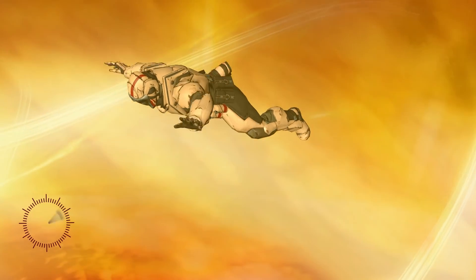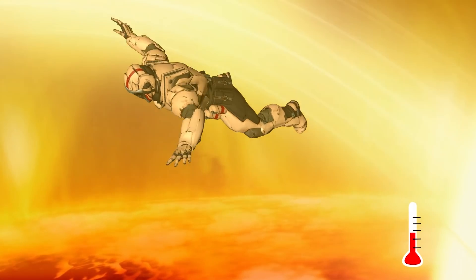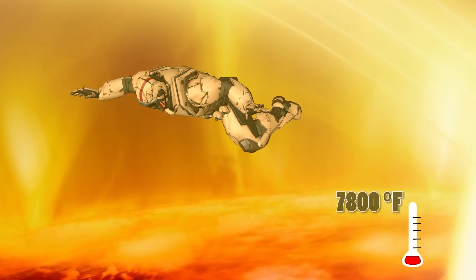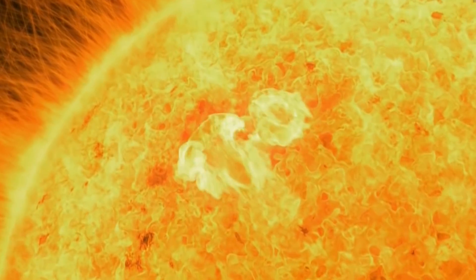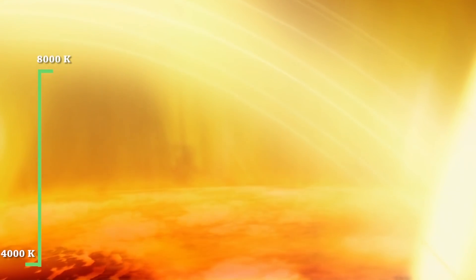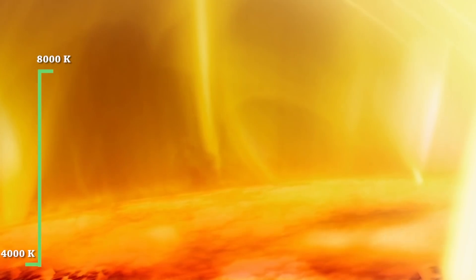After a very long time of falling, as you pass through the corona, the temperature would have dropped to 7,800 degrees Fahrenheit, and you would be within the chromosphere. This layer of the Sun is located between 400 kilometers and 2,100 kilometers above the solar surface. The chromosphere has temperatures around 4,000 degrees Kelvin at the base and 8,000 degrees Kelvin at the top.